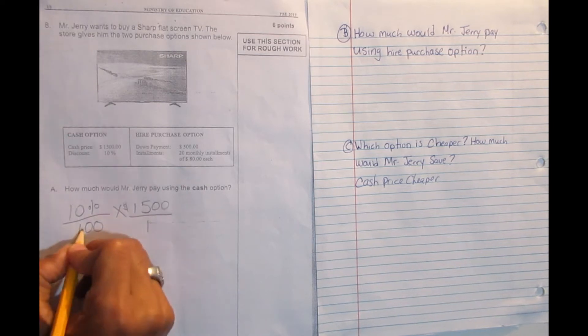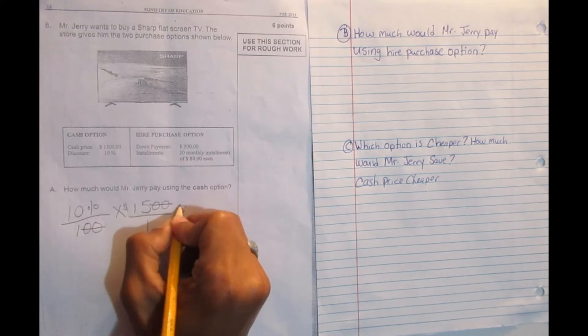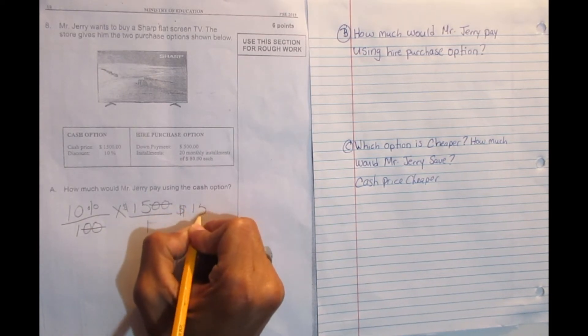We cross multiply. We could cancel two zeros from here and two from here. So now that left us with 10 times 15. And when we multiply 10 times 15, we get $150.